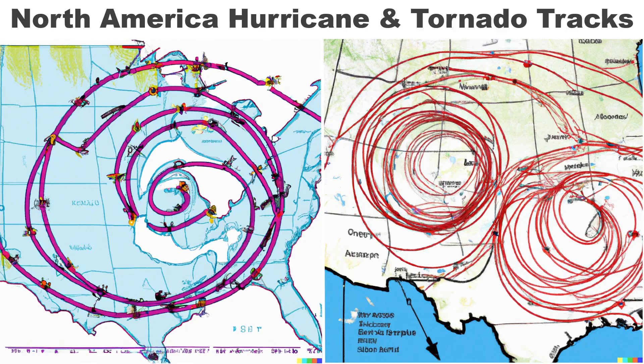Next, our North American hurricane and tornado tracks. Wonderful counterclockwise spirals on these — it's just more good, interesting AI mapping.